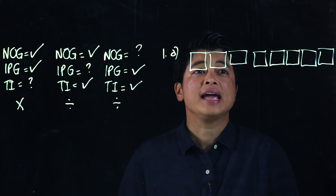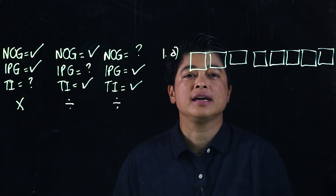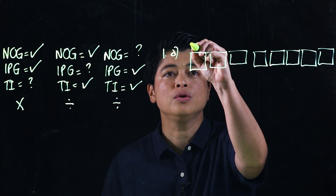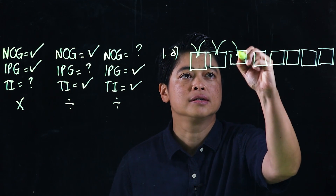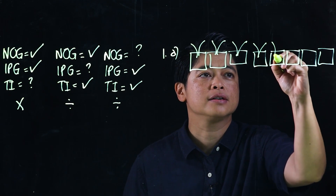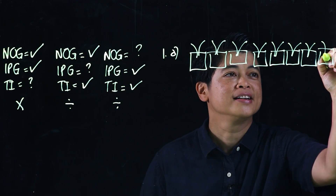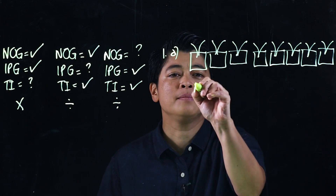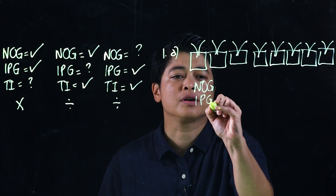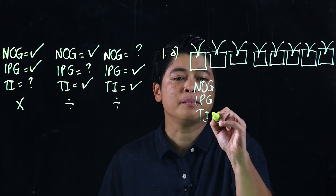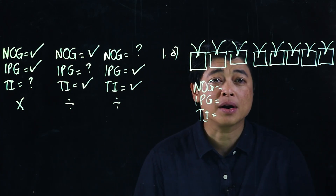There are eight flower pots, and each one has two flowers. Clearly I'm not artistic. This is not required in the problem, but we want to train our kids to do this: identify the number of groups, items per group, and total items.